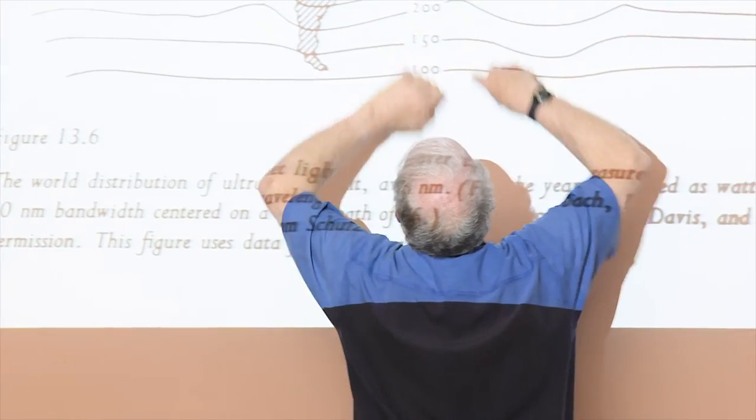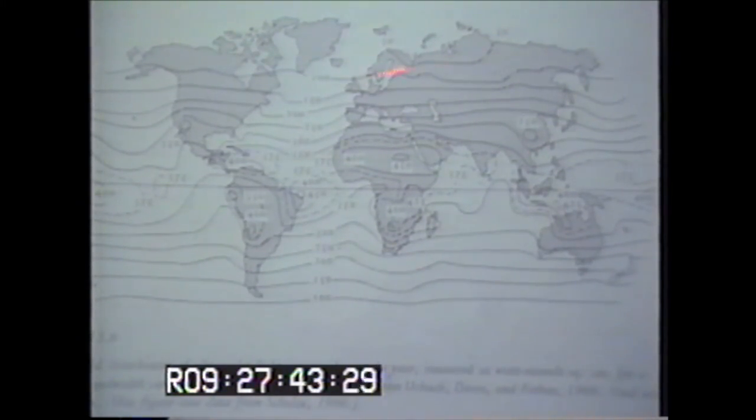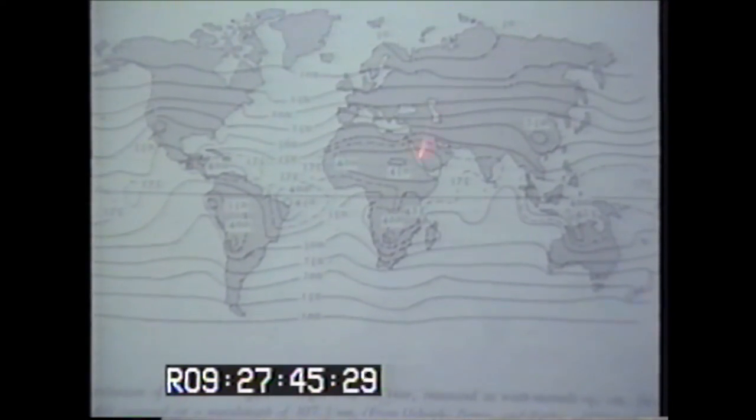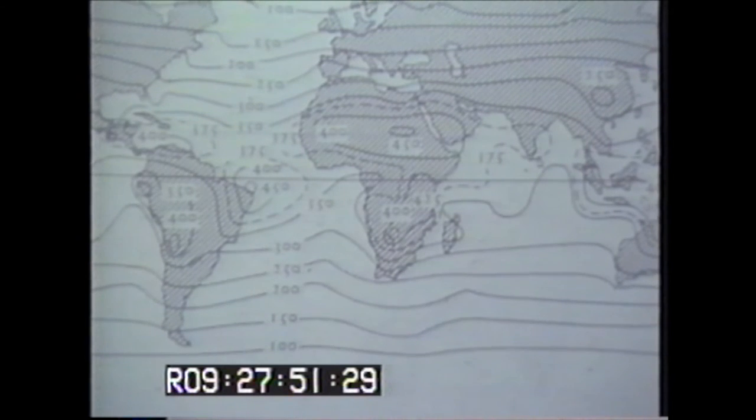It falls off almost in stair steps as you go north. Where you see high numbers there's lots of UV. Where the numbers fall off, like 50 up here in Scandinavia, we're talking about one-tenth, one-eighth of what we receive in the belt around the tropics.